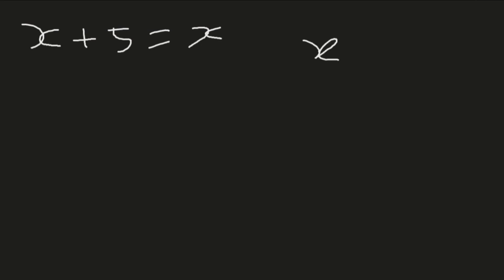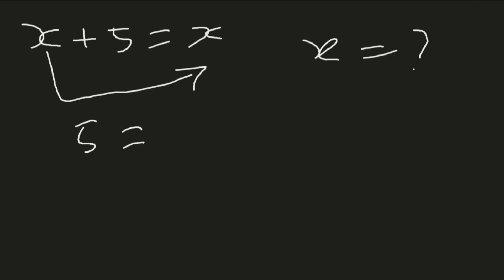What is the value of x? In this video we're going to see how we can get the value of x in such a scenario. Solving this problem by taking x to the other side will not give us a solution, because we shall have 5 being equal to x minus x, which is 5 not equal to 0, and we shall have gotten rid of x. So what are we exactly supposed to do here?